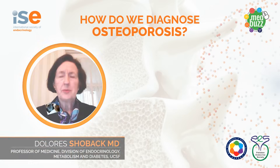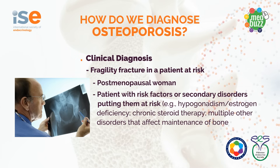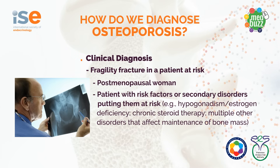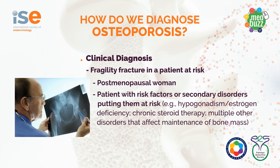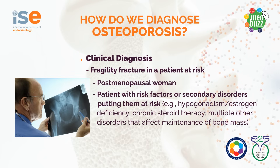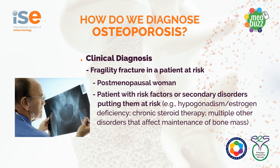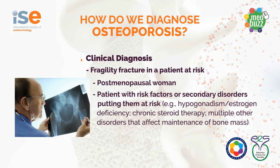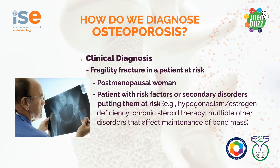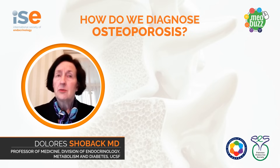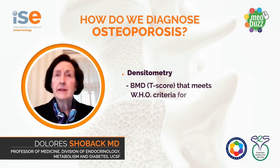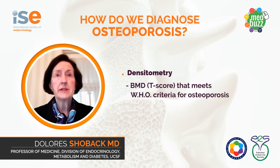So how do we diagnose osteoporosis in the clinical setting? Well, it certainly can be diagnosed if the patient presents with a fragility fracture. If that patient is at risk for such fractures — typically a postmenopausal woman, or another patient with risk factors or secondary disorders — such as estrogen deficiency, testosterone deficiency, chronic steroid therapy, or many other conditions that can affect the maintenance of bone mass. One can also make this diagnosis by densitometry in the individual at risk, if that individual has a bone density by T-score that meets the criteria set by the World Health Organization for the definition or diagnosis of osteoporosis.